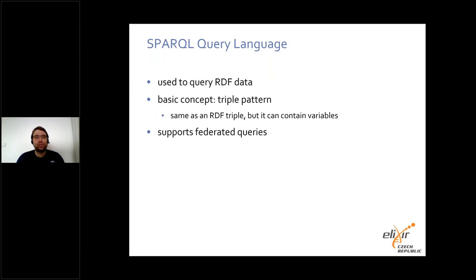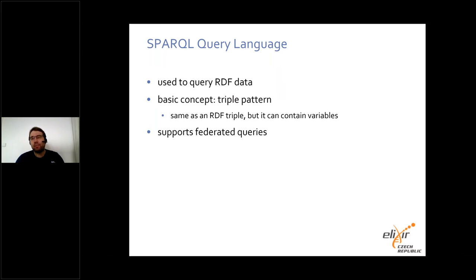In order to support querying RDF datasets, the SPARQL query language was introduced. This language is based on patterns that should be matched by requested data. The language is slightly inspired by the SQL query language used for querying relational databases. Each SPARQL service listens for requests at a specific web address, denoted as its SPARQL endpoint — though the terms 'SPARQL endpoint' and 'SPARQL service' are often used as synonyms.